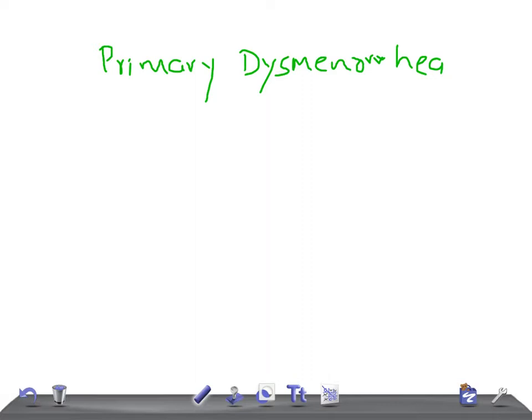Primary dysmenorrhea - the name indicates primary means the cause is not known, there is no pathological cause. Remember, secondary means there is a cause like endometriosis. Primary means there is no pathological cause, pelvic pathology is normal, but they have dysmenorrhea, there is pain during menstruation. It's recurrent crampy lower abdominal pain.